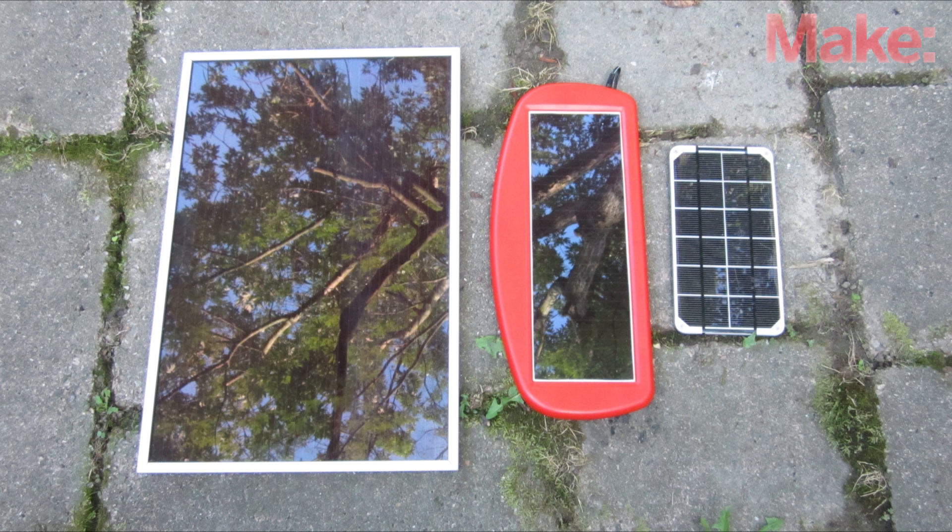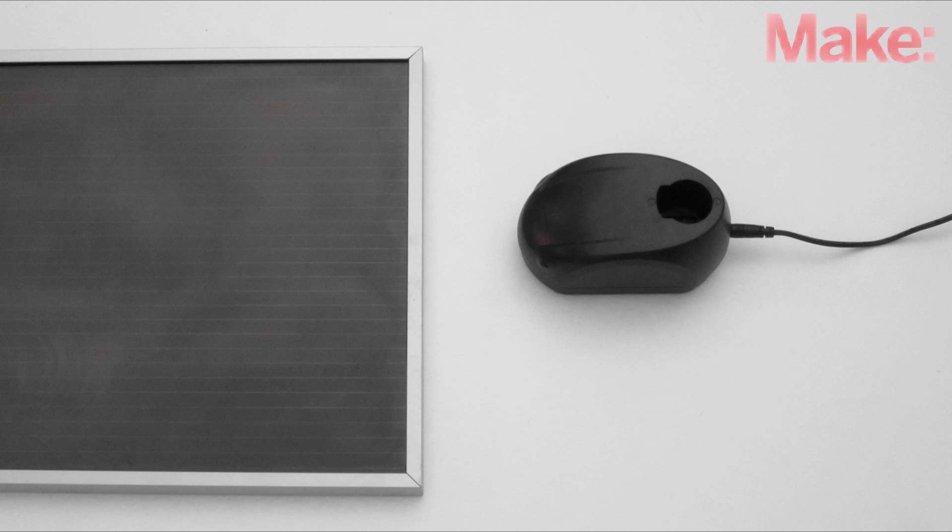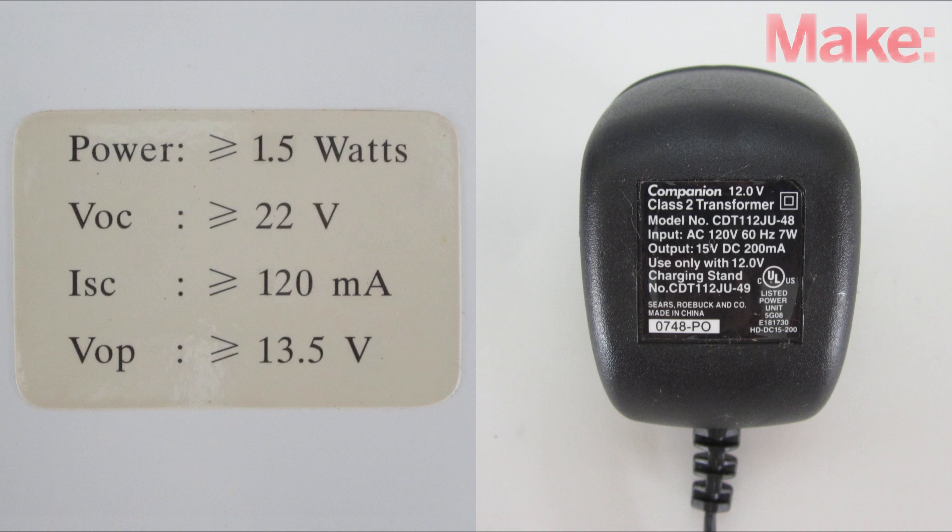The next thing that you need to do is select an appropriate solar panel. For safety, we want a panel that will charge the battery more slowly than the regular charger. The easiest way to do this is to get a panel that has a lower wattage rating than the charger.